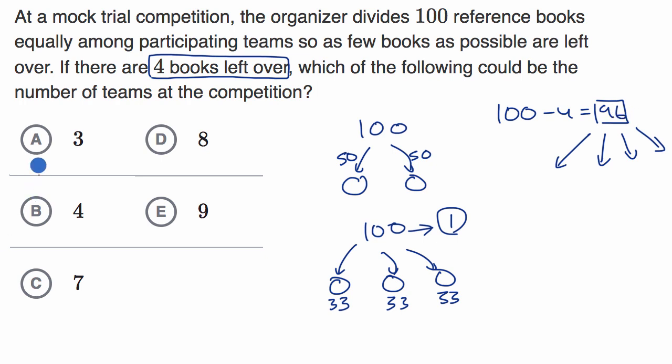So look at the choices. Choice A here says three teams. So first of all, is 96 divisible by three? Well, you could use a calculator if you like on the praxis, or some of you might recognize that 96 divided by three is exactly 32. And so you might say, hey, A looks like a good choice, except for an interesting situation. If you did indeed have three teams, so actually this is this scenario right over here, how much would you have left over? Well, you would have one left over, not four left over.